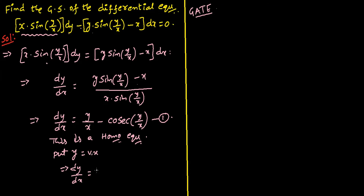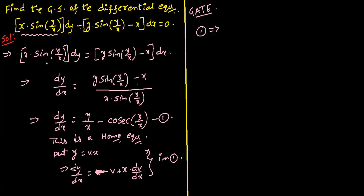Applying the product rule: dy/dx equals v plus x times dv/dx. Now we replace these values in equation (1).